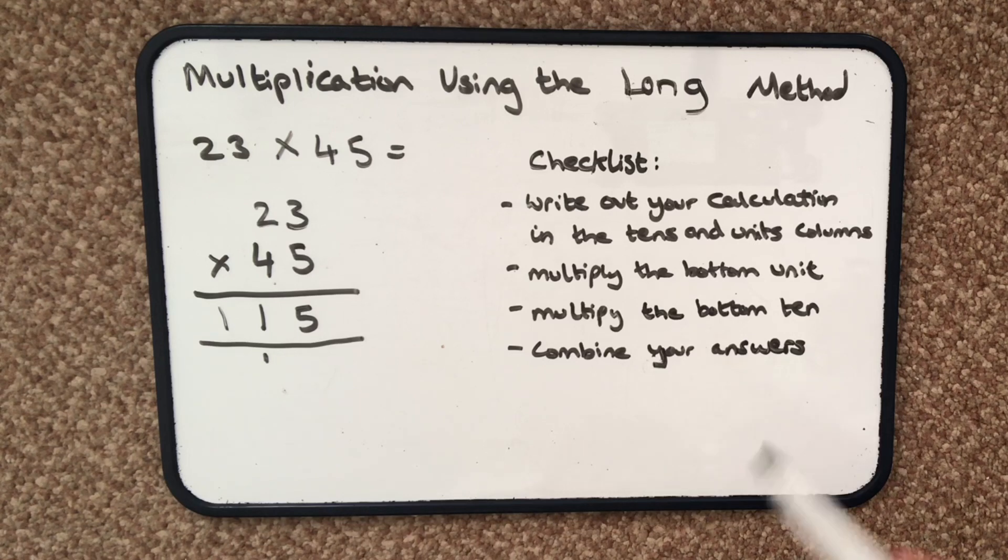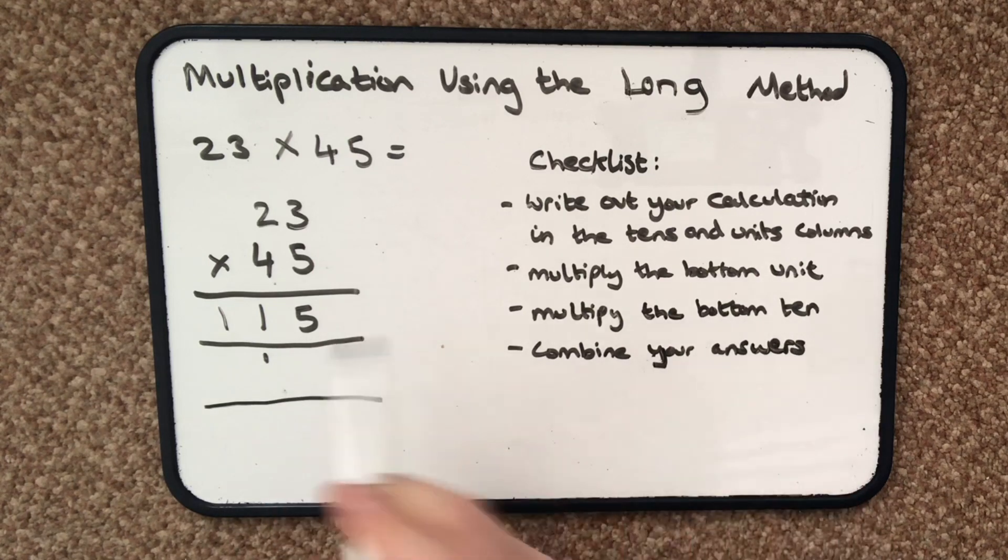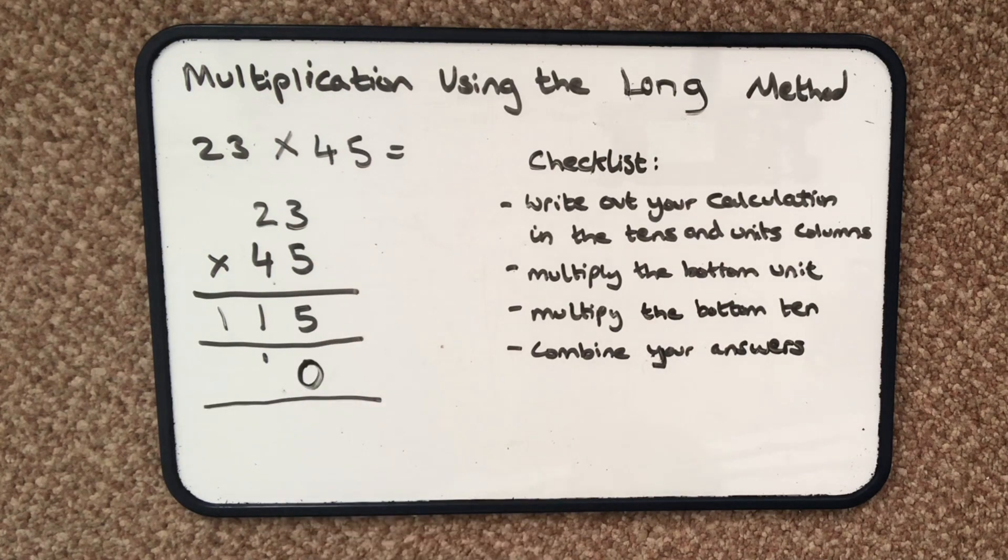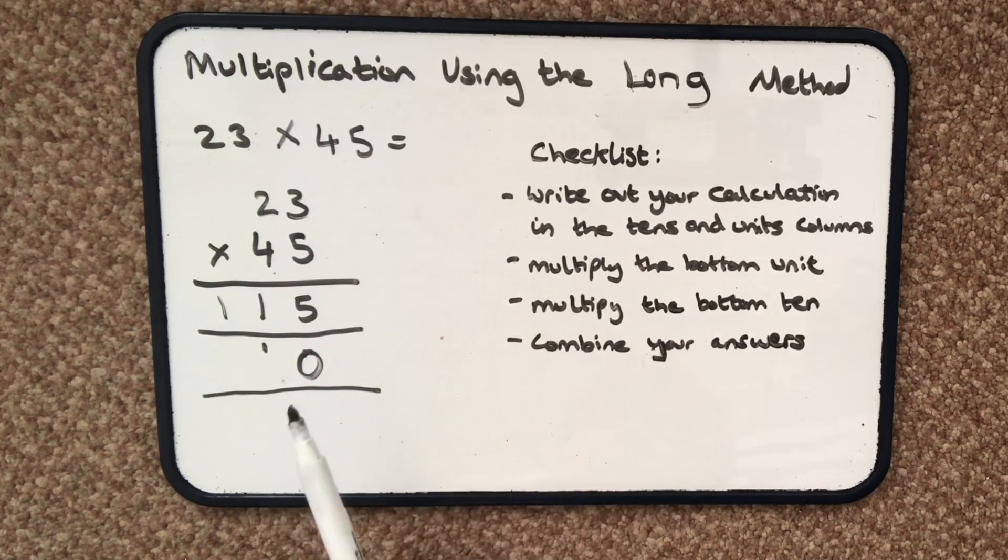I'm now going to multiply the bottom 10 and I'm going to start a new row here. Because I'm going to be doing the 4 tens, because it's tens I have a placeholder of 0 so I know that I'm actually not just multiplying by 4, I'm multiplying by 40.